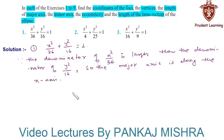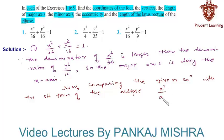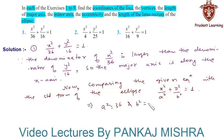On comparing the given equation with the standard form of the ellipse x² / a² + y² / b² = 1, we see that a² = 36 and b² = 16, which implies that a = 6 and b = 4.